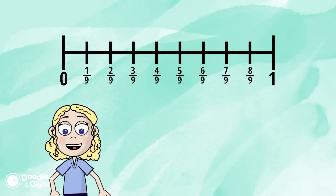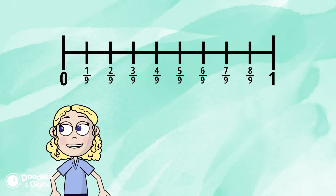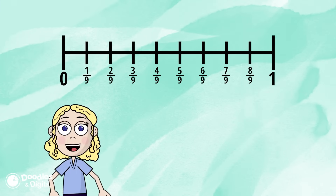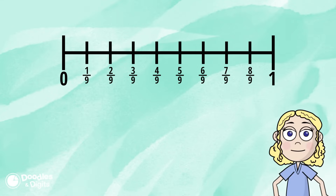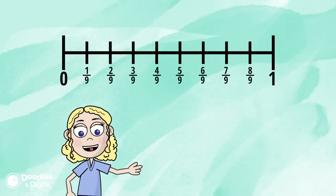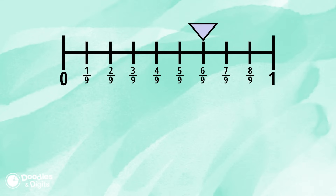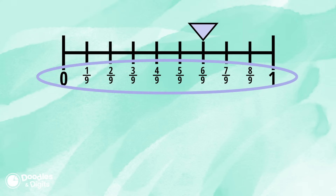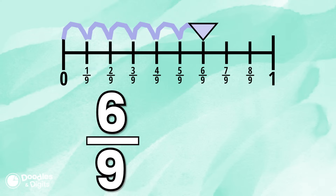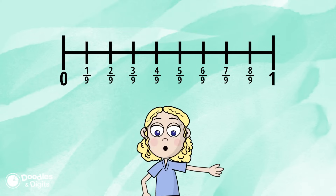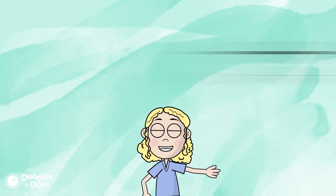You can also use a number line to show fractions. Let's look at a few number lines right now. Here is a fraction number line. What do you notice? What do you wonder? Between zero and one it is cut into ninths. We're going to see how many jumps we need to make to get to the arrow. We make six jumps, so our fraction is six ninths.